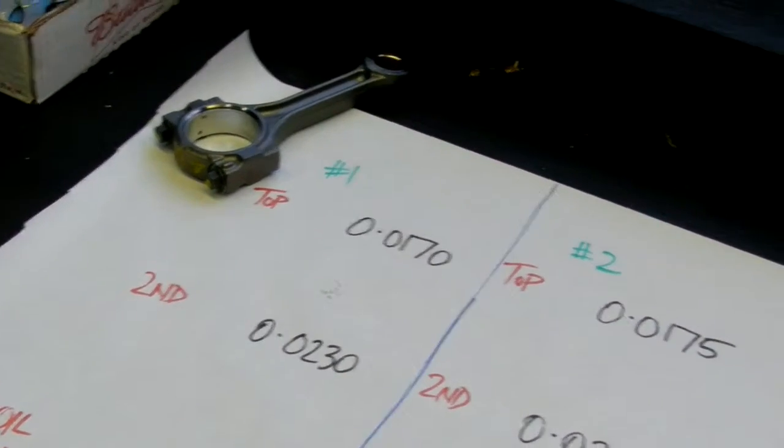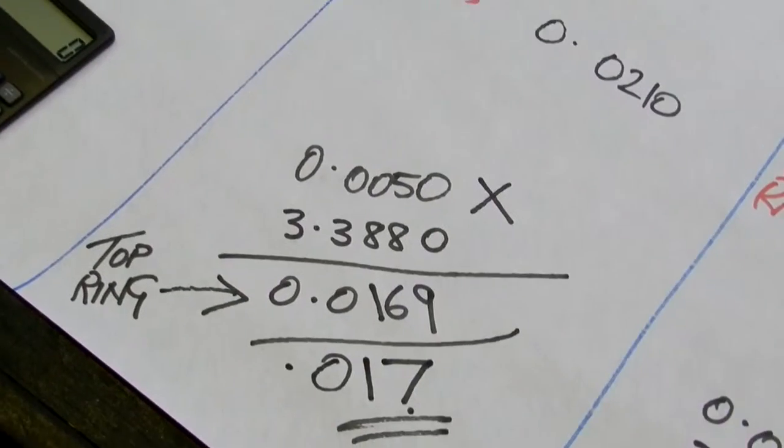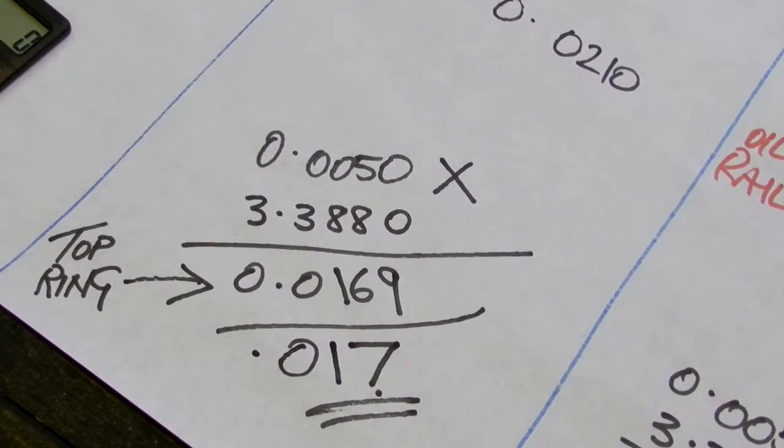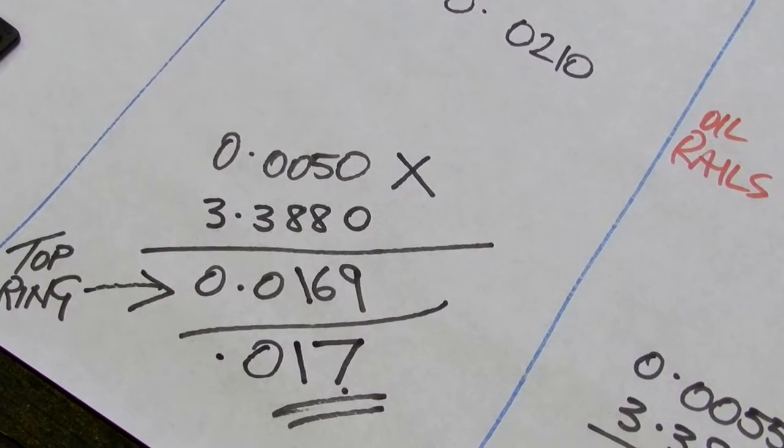Now if we go back to our number one specs, you'll see top ring 0.017, 0.0175, 0.0175. Wiseco is asking for 0.017 so we're beautiful there, no issues there. Thing of beauty.